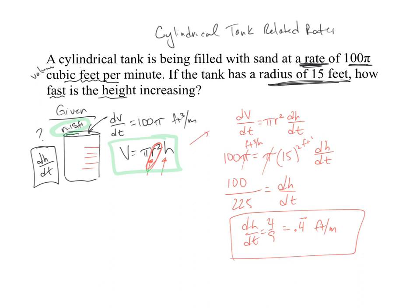And then just set up the formula and solve for dV/dt or dh/dt based on the information given after you implicitly differentiate. Now, if they ask for surface area, obviously we'd use a surface area formula and we'd go from there.